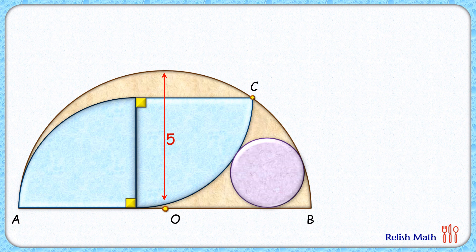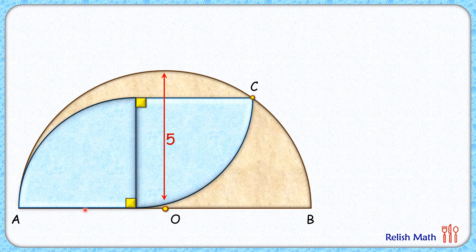Let's check the solution. We'll solve it in two steps: first, we'll find the radius of the quadrant, and second, we'll find the radius of the circle. For now, let's remove the circle. Let's assume the radius of the quadrant is r centimeters. From point C, let's drop a perpendicular on AB.